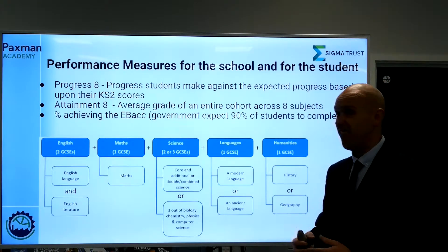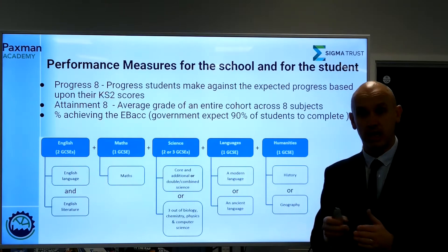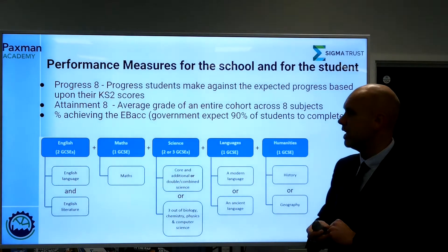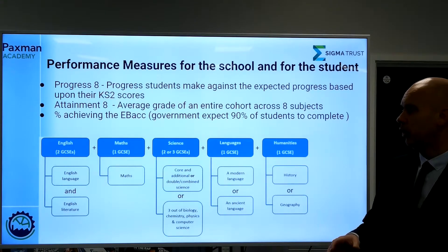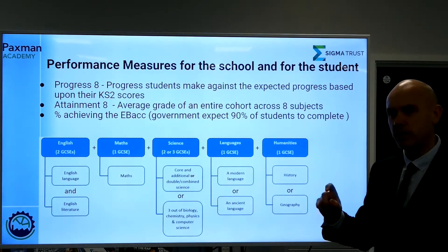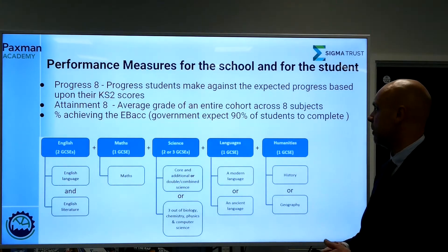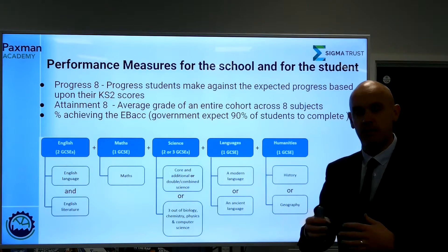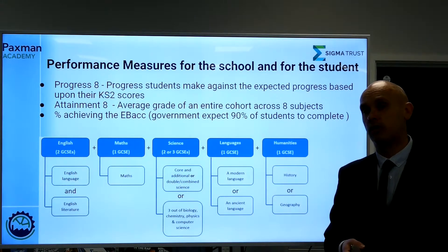The second measure is Attainment 8, which is just a raw attainment grade — the average grade of the entire cohort across eight subjects. That's why all students need to sit eight subjects; they'll need this for their next steps within qualifications anyway. The final measure is what's called the EBacc — the English Baccalaureate. The English Baccalaureate is made up of English Language and Literature, Maths, core or additional sciences, and then students must choose a language and a humanities subject.